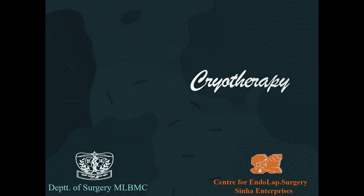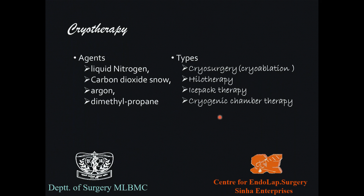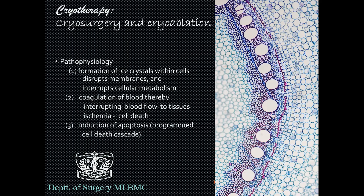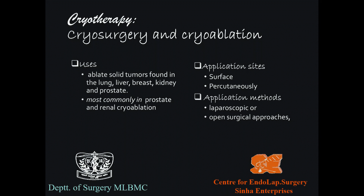Cryotherapy uses agents including liquid nitrogen, carbon dioxide snow, argon, and diethyl propane. Forms include cryosurgery (cryoablation), hyalotherapy, ice pack therapy, and cryogenic chamber therapy. The pathophysiology: ice crystal formation within cells disrupts the membrane and interrupts cellular metabolism; coagulation of blood interrupts blood flow causing ischemia; and cell death with induction of apoptosis occurs. Cryoablation is used to ablate solid tumors of the lung, liver, breast, kidney, prostate, and adrenal glands.